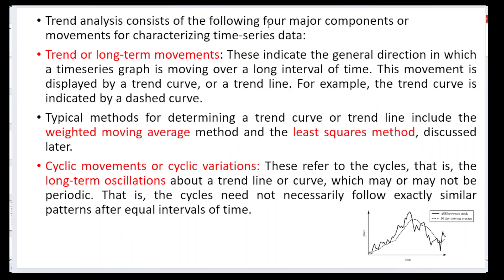Trend analysis consists of four major components for characterizing time series data. The first is trend or long-term moments, and the second is cyclic moments or cyclic variations. Trend or long-term moments indicate the general direction in which a time series graph is moving over a long period of time — whether it is going in an upward or downward direction.